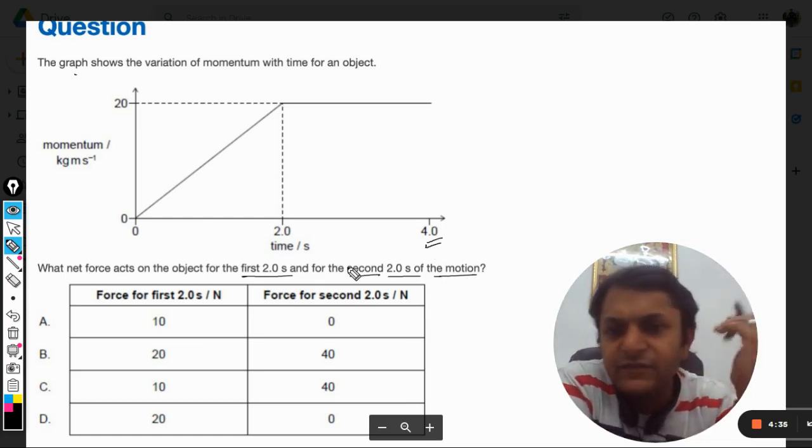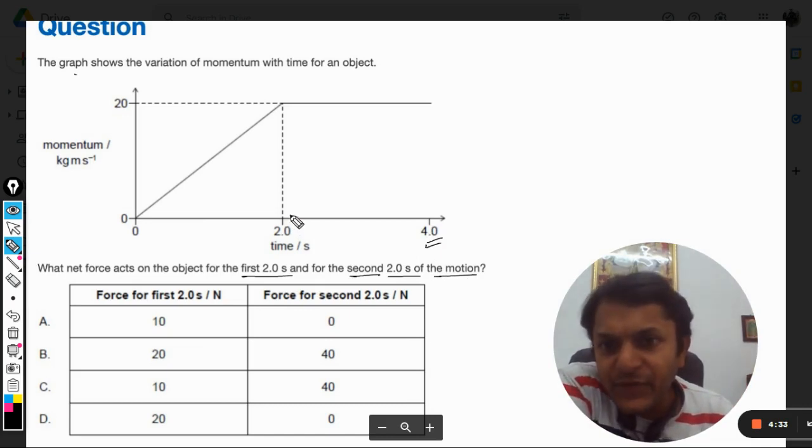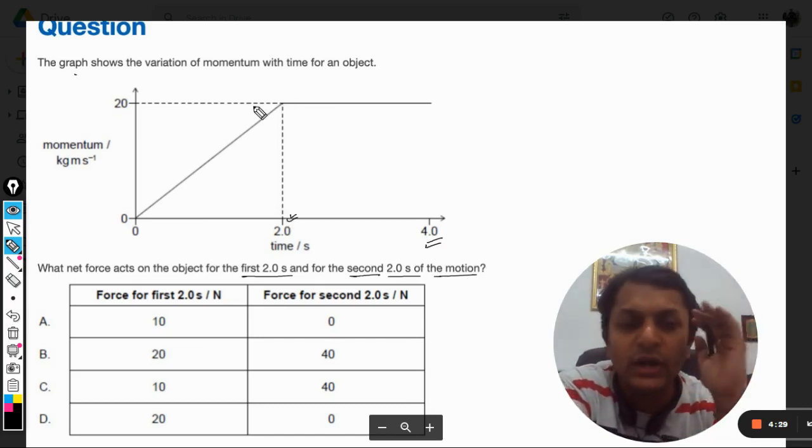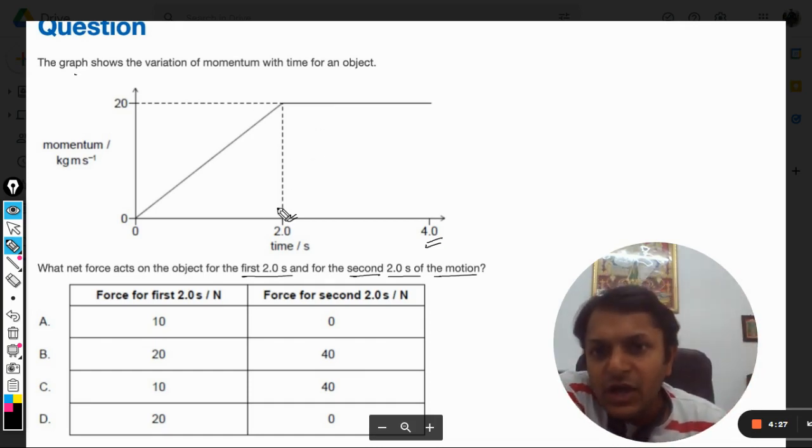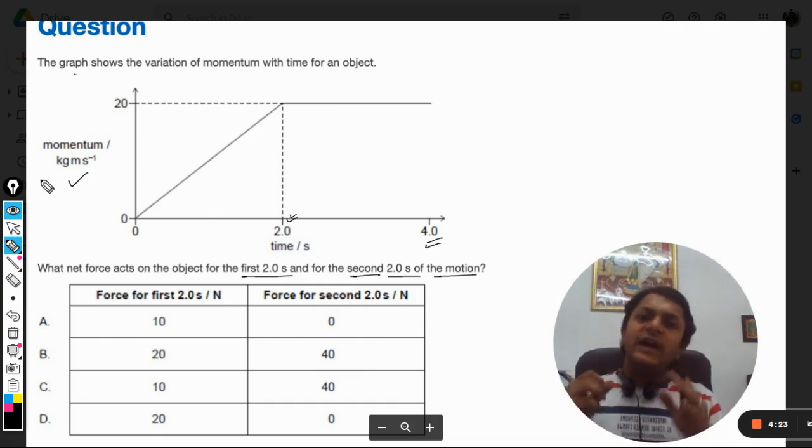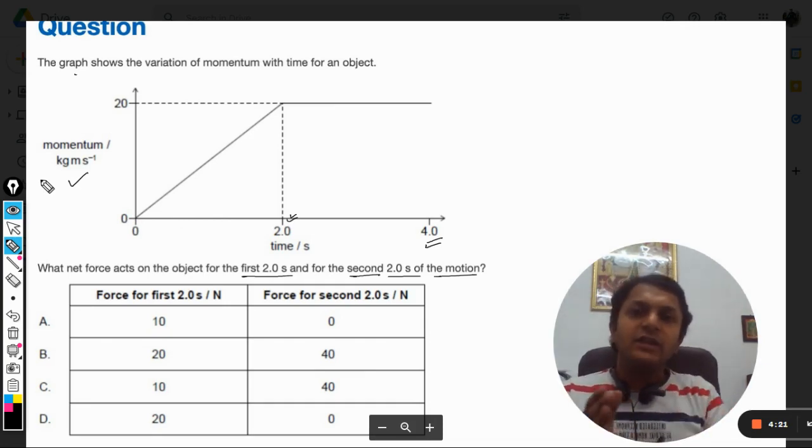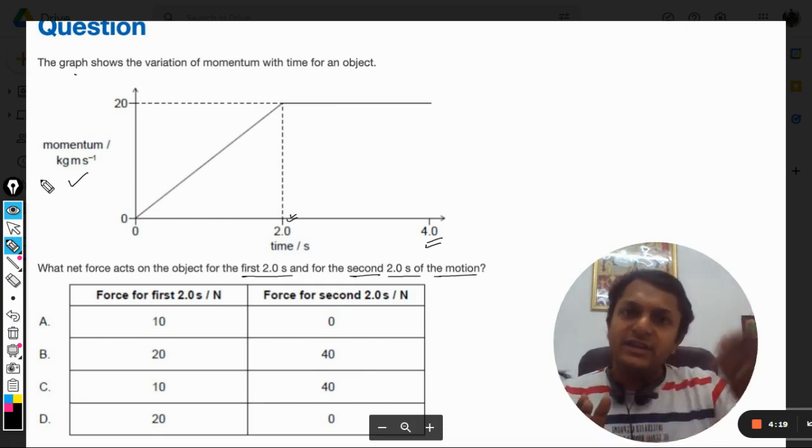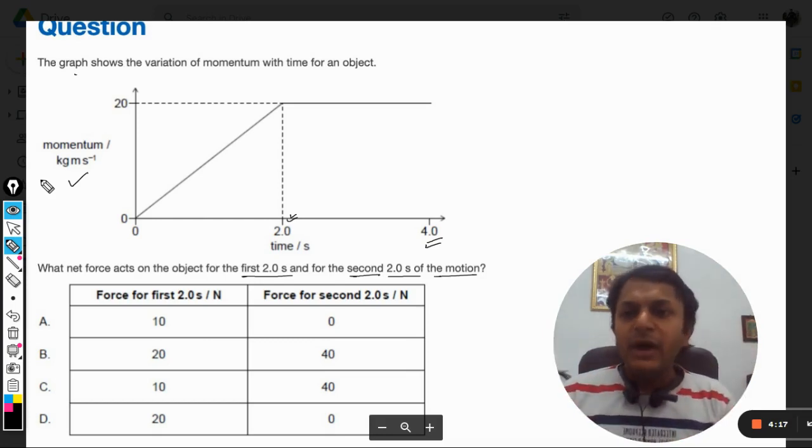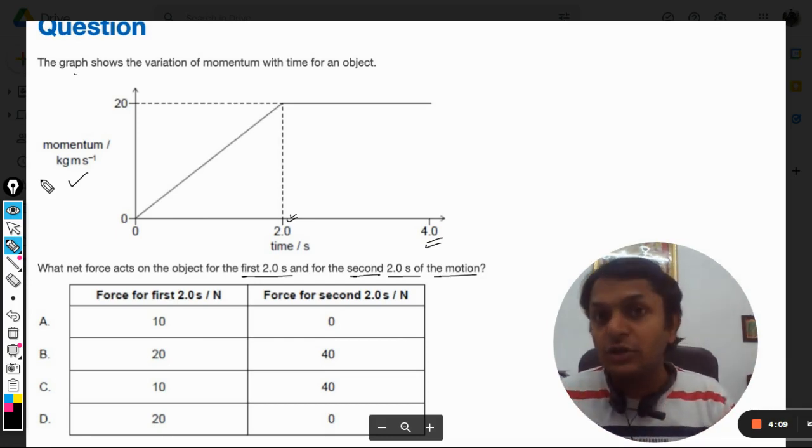As we can see from the graph, at the two seconds there is a major change taking place. For the first two seconds, momentum is directly proportional to time and continuously increasing with respect to time. But for the second two second time period, the momentum does not change.